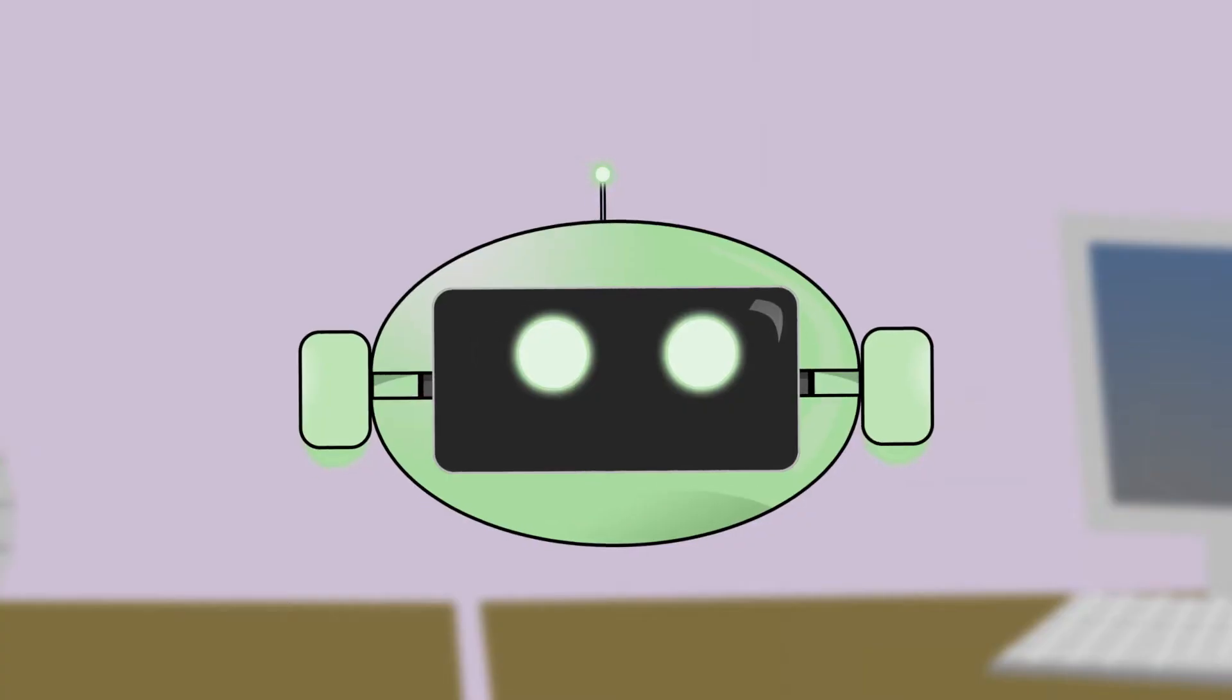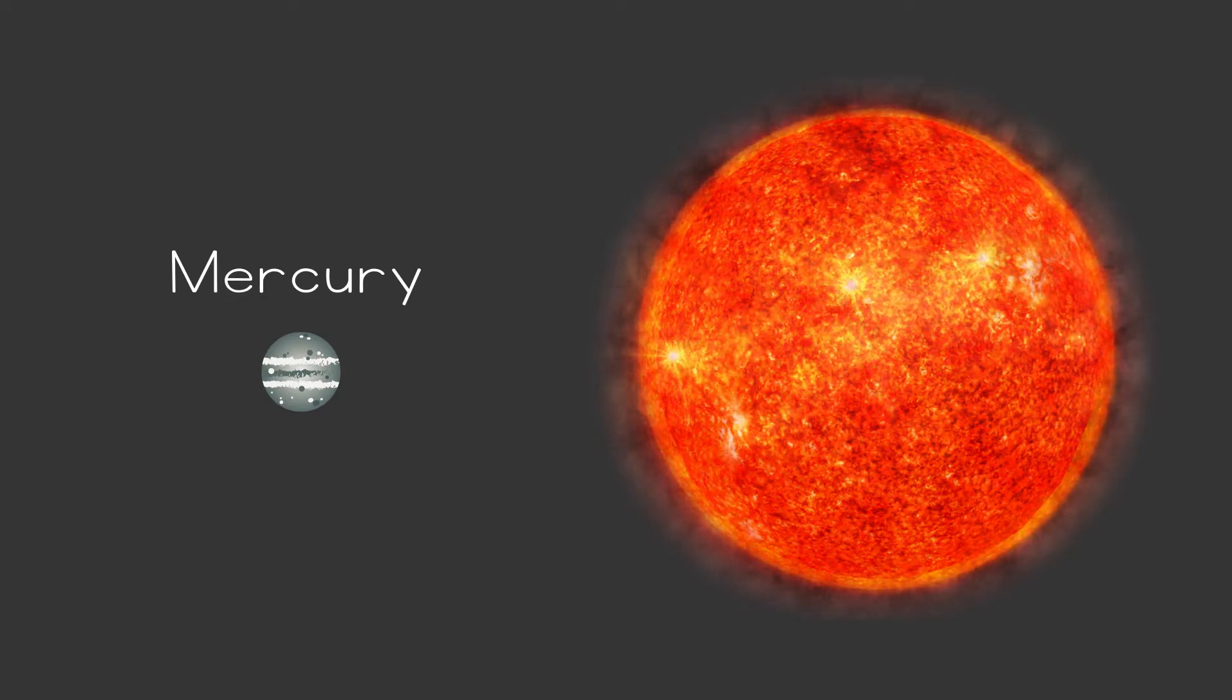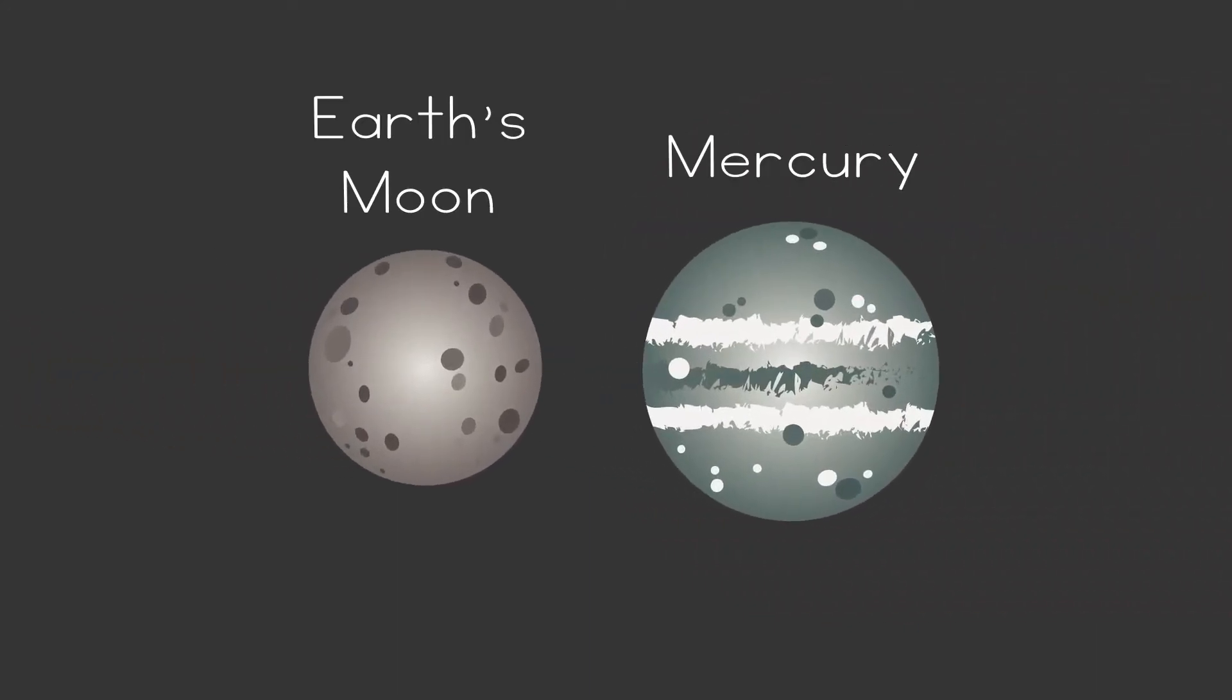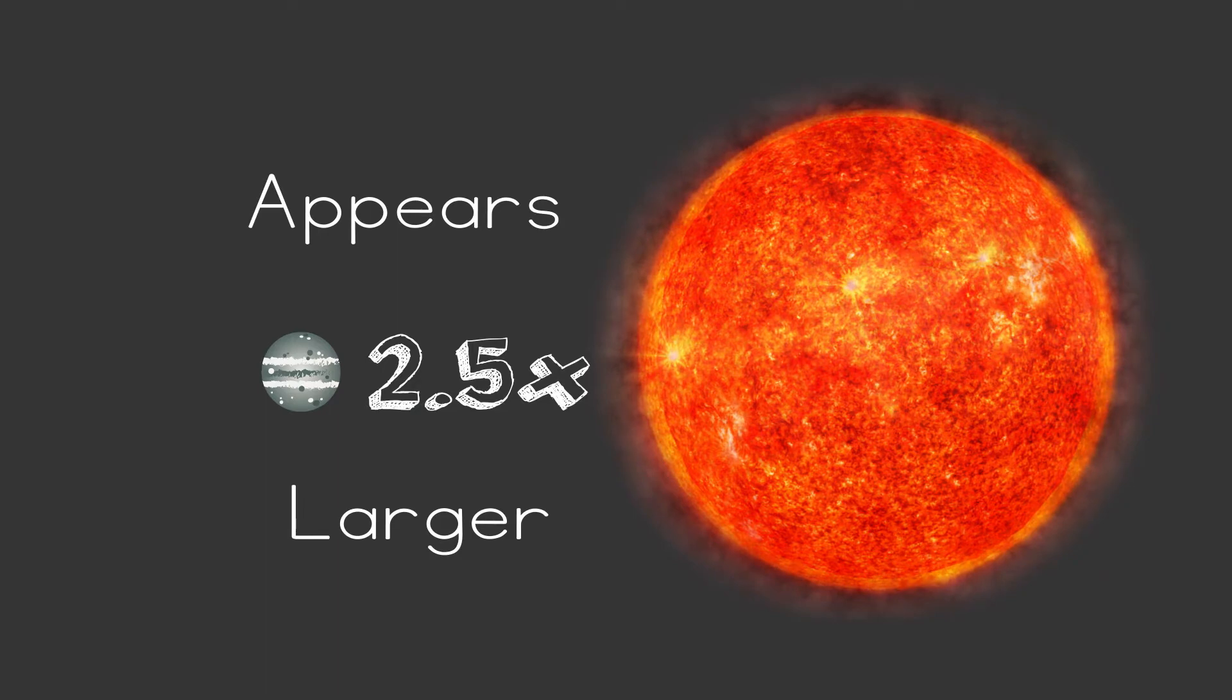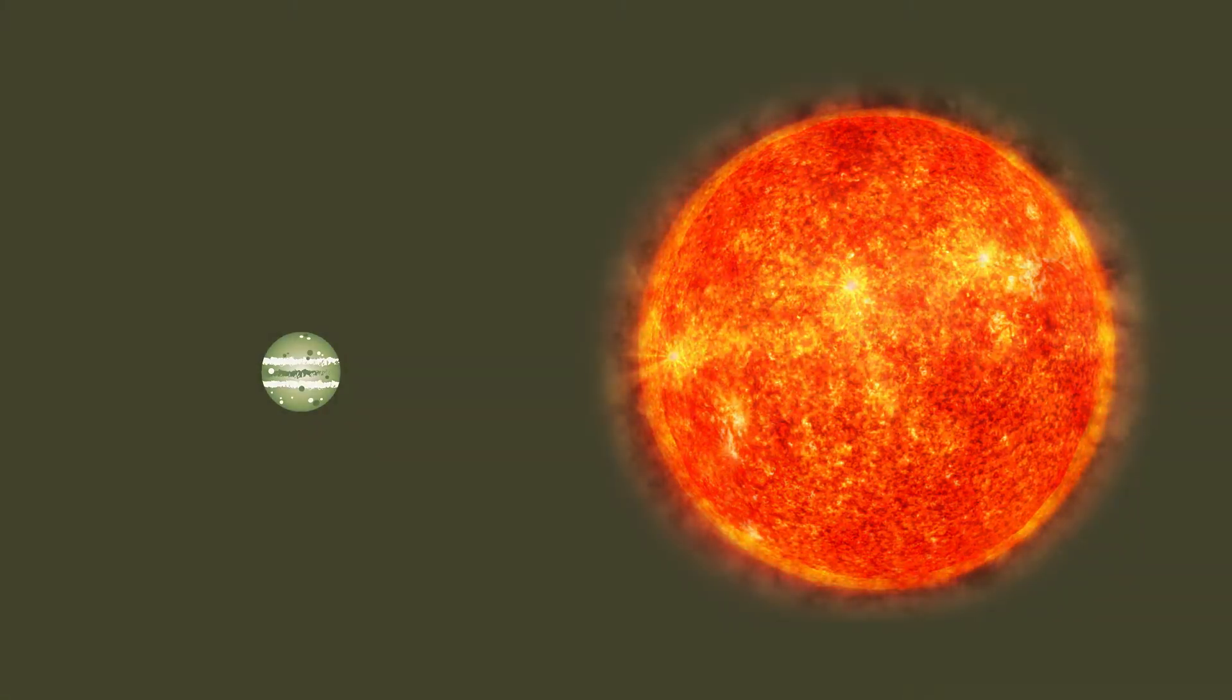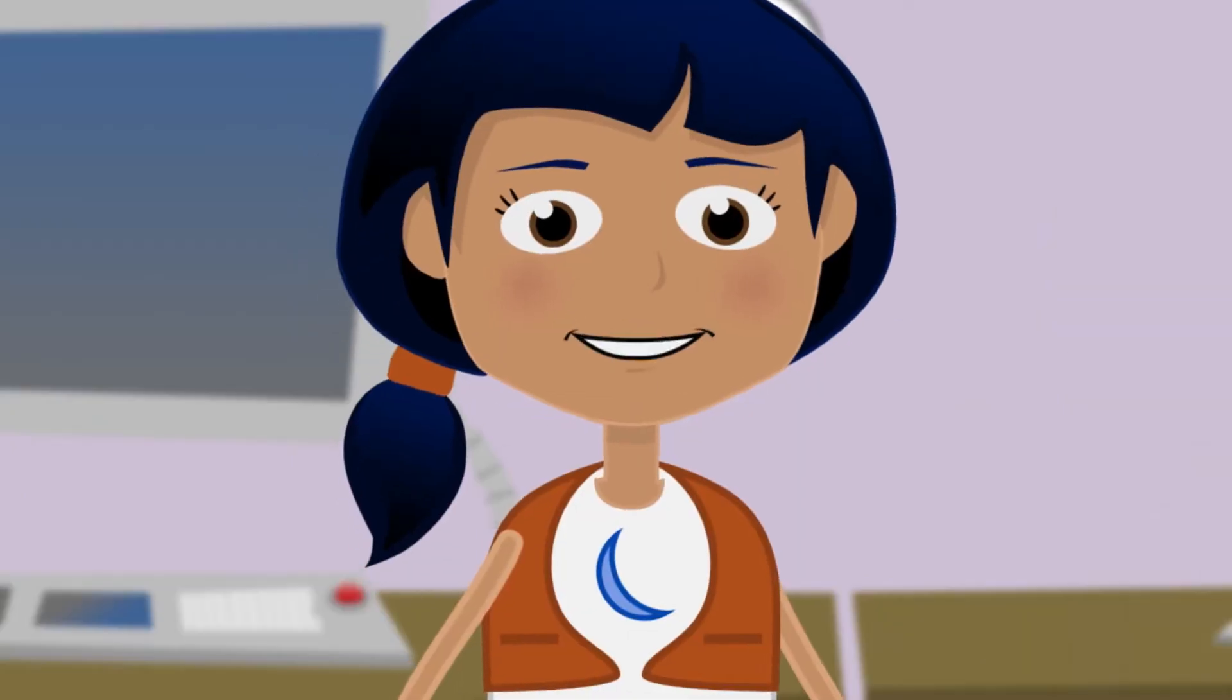It's the closest planet to the sun and it's the smallest planet. Correct! It's actually only slightly larger than the Earth's moon. Because it's so close to the sun, the sun appears two and a half times larger on Mercury than it does on Earth. And the sunlight is at least seven times brighter. Wow, you'd really need the sunglasses on Mercury.